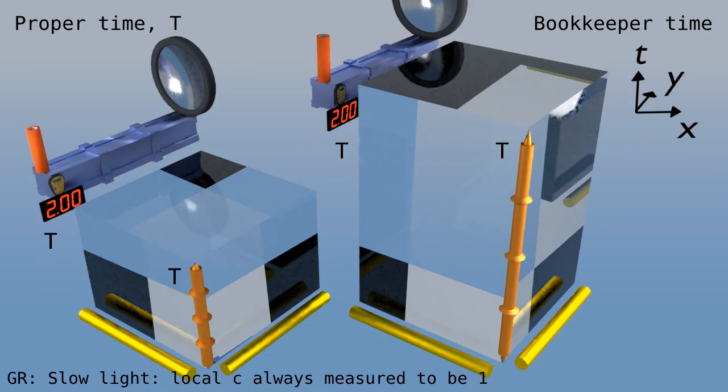In the same way, the speed of the flash as shown in the video is the bookkeeper speed of light, which varies in contrast to the proper speed, which is always one.